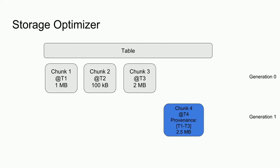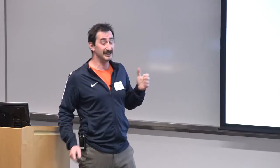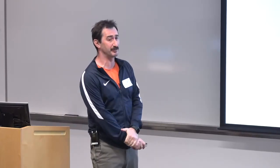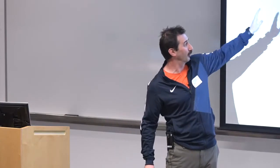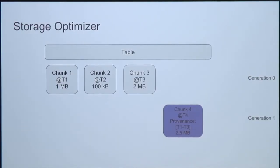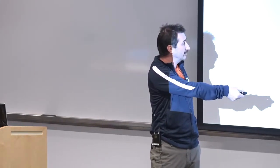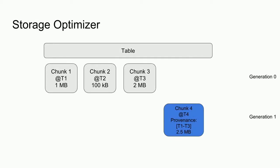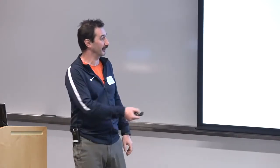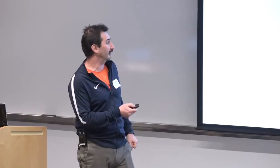As an example of storage optimization: suppose there were three commits at three different times producing three appended chunks. At some later time, the storage optimizer on its own — without user involvement — combines them together. For example, 1 MB, 100 KB, and 2 MB might compress together to just 2.5 MB due to better encoding. From that point on, the combined chunk contains the same data and will be queried instead — unless time travel is needed.